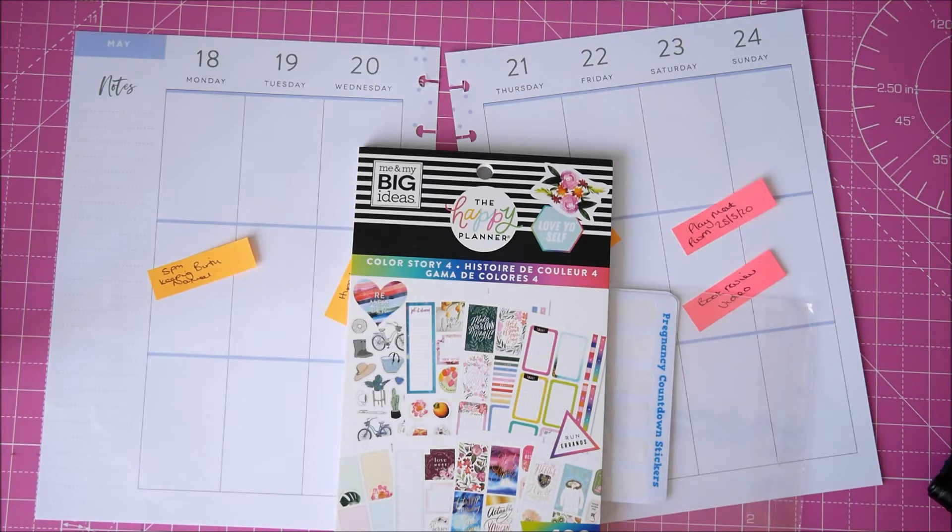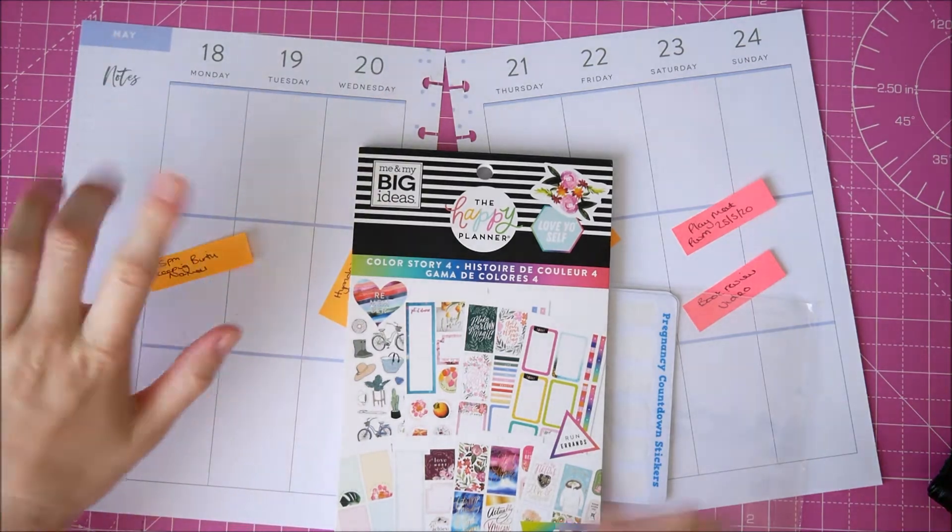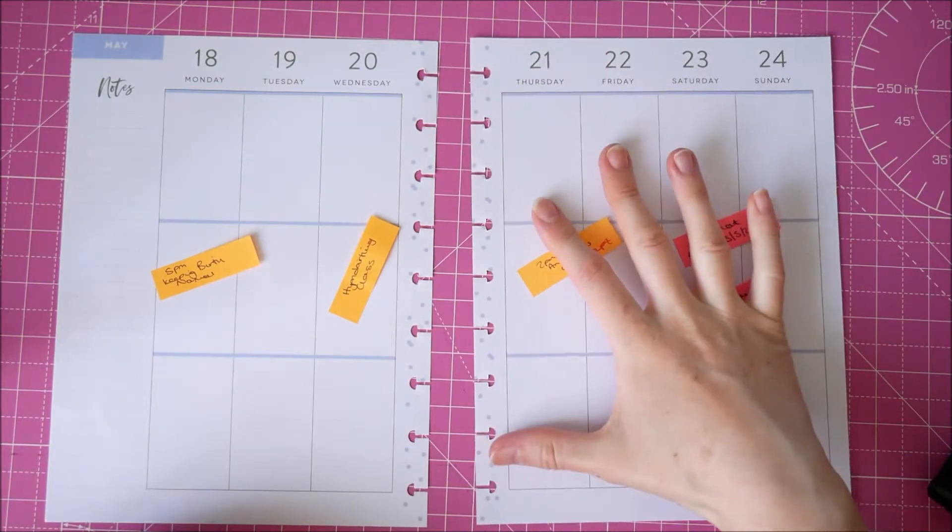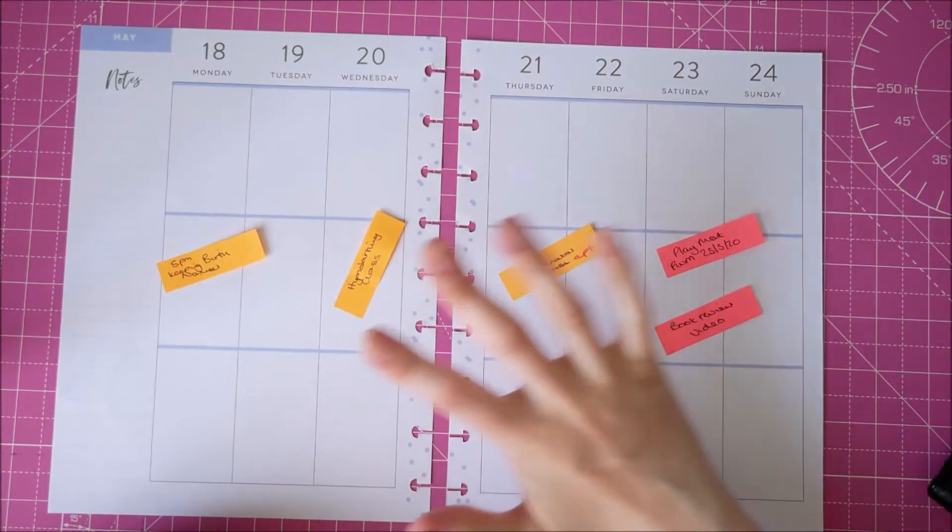Hello everyone and welcome back to my channel. It's another plan with me for the week beginning the 18th of May in my classic Happy Planner, Funky Brights, although obviously the actual weekly pages are quite neutral, not particularly funky.